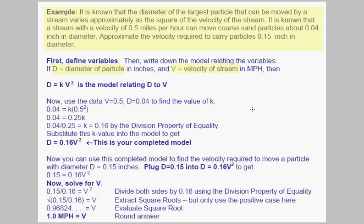First, we want to define our variables. We're going to let d equal the diameter of those particles and v equal the velocity of the stream in miles per hour. Our next step is to form our model. Using our knowledge of variation, we know that diameter varies directly as the square of the velocity, so we get the model d equals kv squared. Our next step is to use the data given to solve for our constant. We plug in d equals 0.04 and v equals 0.5, and we get k equals 0.16. Our completed model is d equals 0.16v squared.